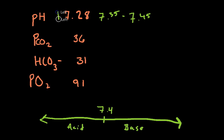So 7.28 is decreased. So, that puts us in an acidic state, so that tells us that it's in acidosis. Now, our next step is to determine if it's metabolic or if it's respiratory, and we figure that out by continuing to go through these.